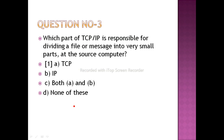Which part of TCP/IP is responsible for dividing a file or message into very small parts at the source computer? TCP/IP has two parts working together. The answer will be both A and B — Transmission Control Protocol and Internet Protocol work together. In Internet Protocol, data is organized in the form of packets.